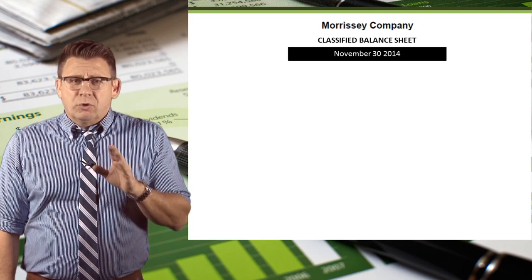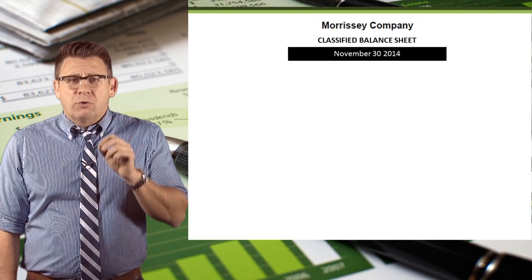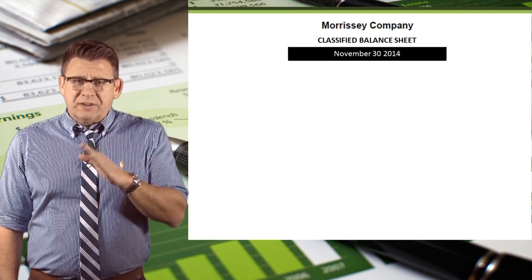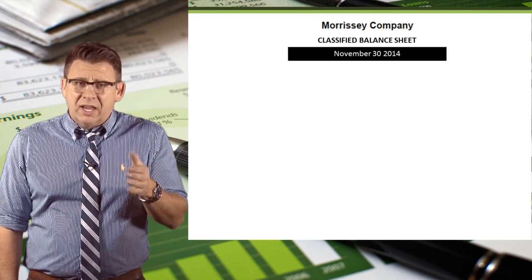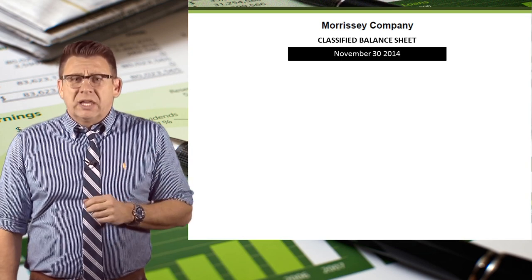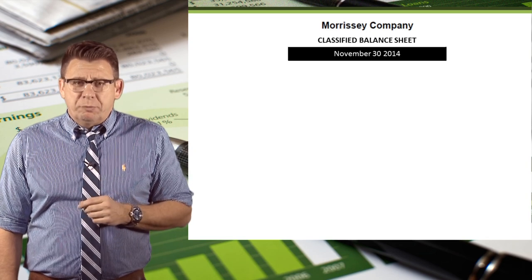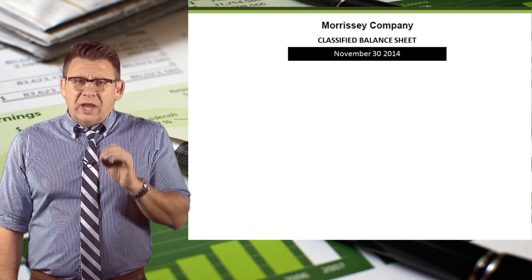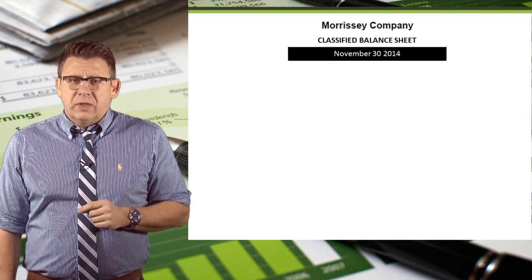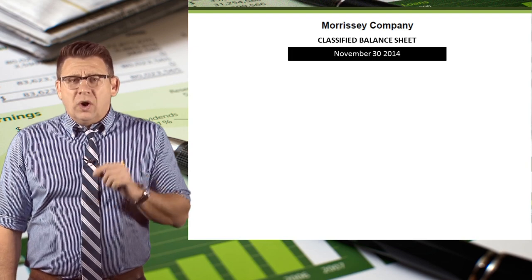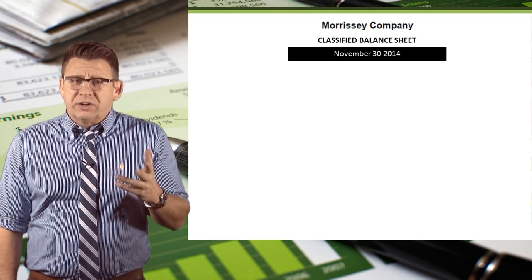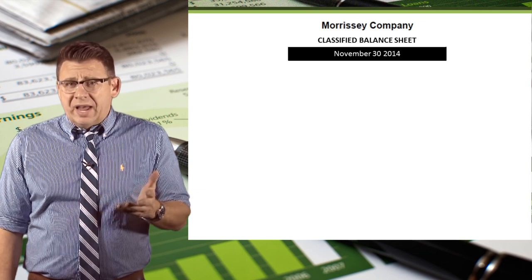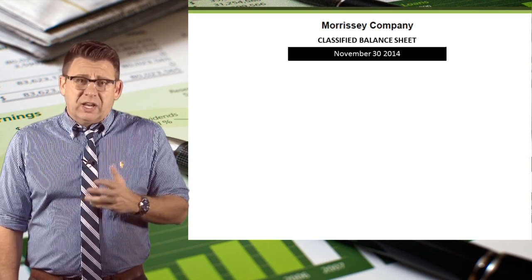The balance sheet reports assets, liabilities, and equity for a point in time rather than a period of time. This is because investors and creditors want to know the financial position today, not some accumulated amount that has no meaning. For example, which is more relevant to future decision making — how much money you have right now, or how much money you've had over your entire life? Certainly what you have now is the only thing that would impact a future financial decision like buying a home.